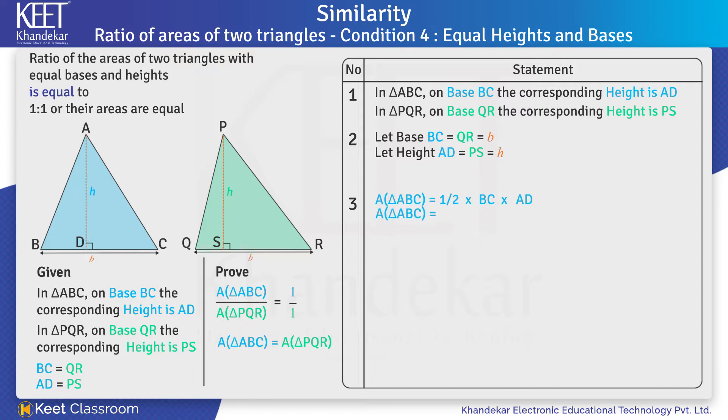Area of triangle PQR equals half into base QR into height PS. On substituting B for QR and H for PS, we get area of triangle PQR equals half into B into H.